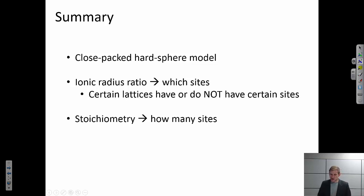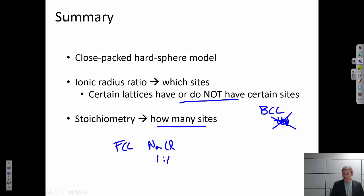Okay, so we've thought about ionic structures. We've talked about how they also follow a close-packed hard sphere model. But the two important things: Ionic radius ratios are going to tell you which sites are occupied. Are those cations sitting in cubic sites, octahedral sites, tetrahedral sites? Certain lattices do or do not have certain sites. So for example, the BCC lattice does not have tetrahedral sites. So if you found by the ionic radius ratio that the cations want to sit in tetrahedral sites, then those anions are not going to be coordinated in a BCC structure. And finally, we talked about stoichiometry. How many of the sites are occupied? And so in FCC case, for sodium chloride, we know there's a one-to-one ratio. And so that meant that all of those octahedral sites had to be occupied.